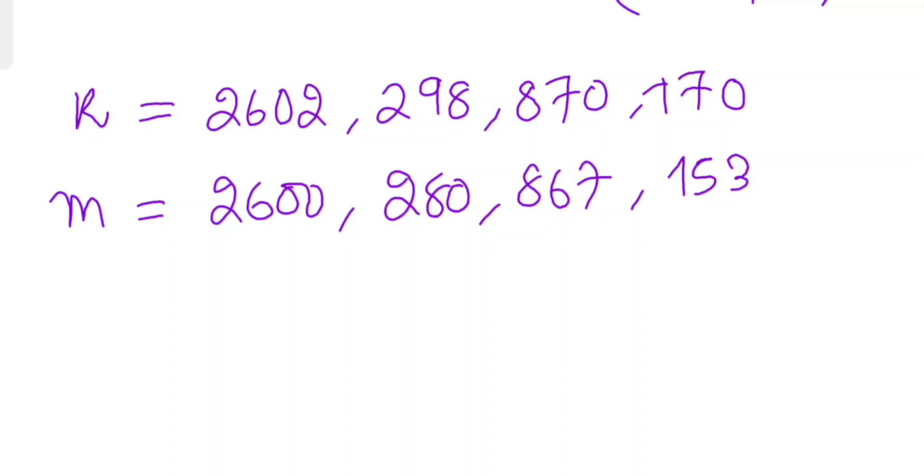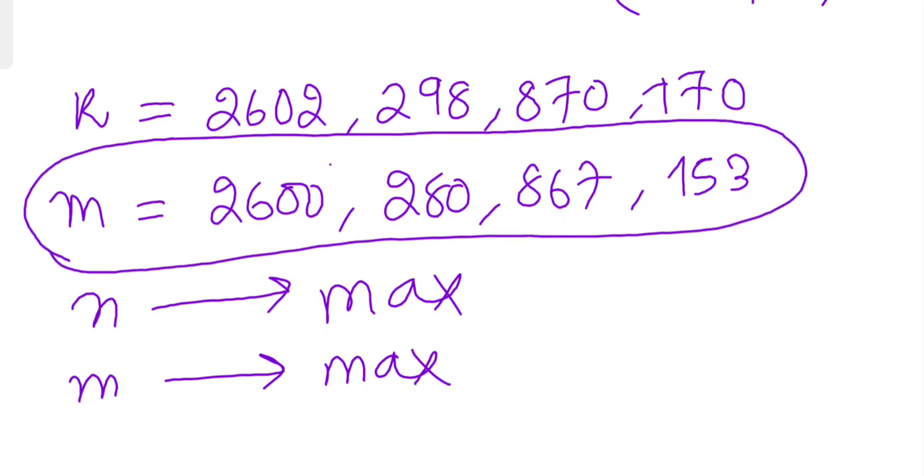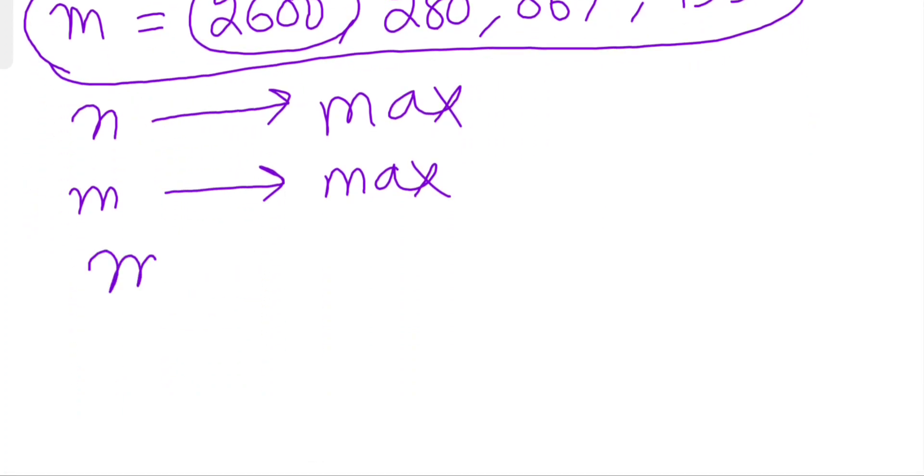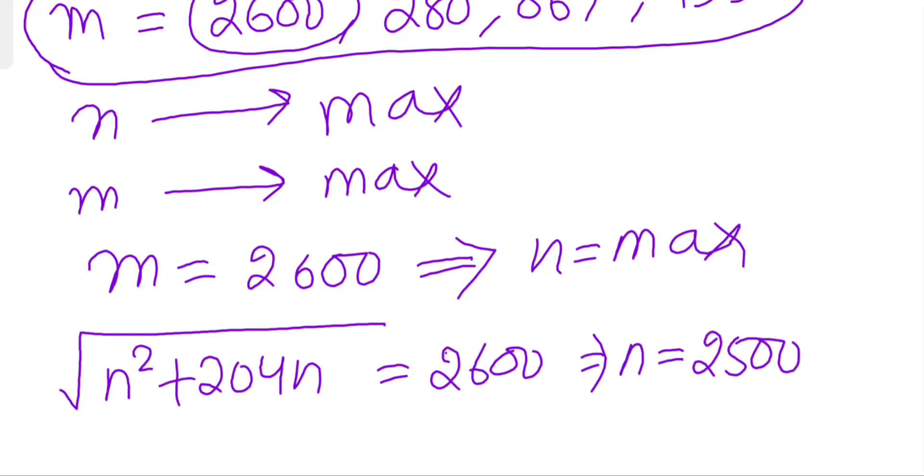In these values of m, the maximum value of m is 2600. If you take m equals 2600, therefore n equals maximum. If you plug m equals 2600 in our equation, you get 2500. This is our answer, the maximum value of n. Thank you for watching, see you next time.